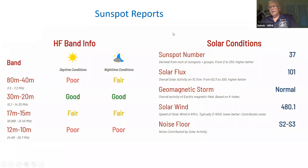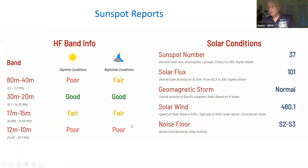Another thing you can do is check your sunspot activity if you think the antenna is not getting out. For example, this one tells you that if you happen to be on 15 or 17 meters, it's fair propagation, but 12 and 10 meters at this particular time will be poor. That doesn't mean your antenna is not performing — it just means that propagation is not good.